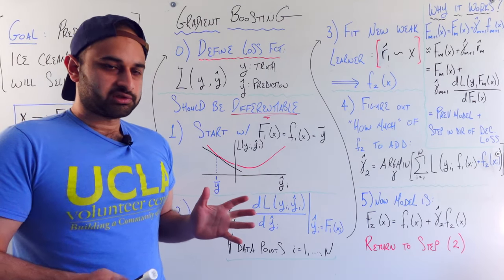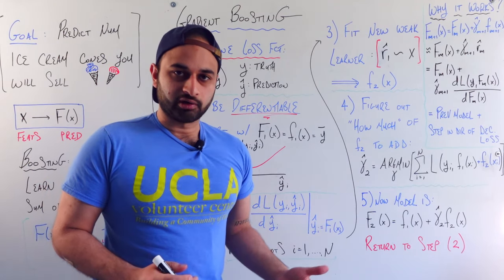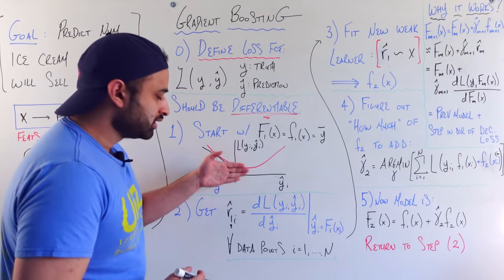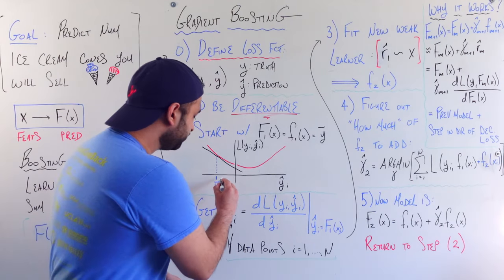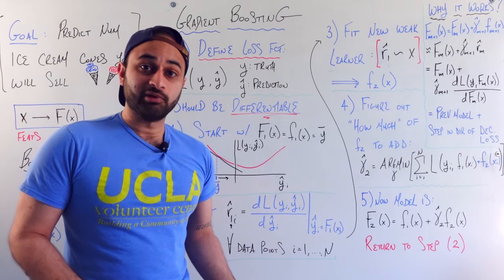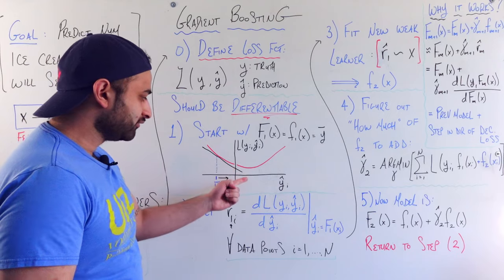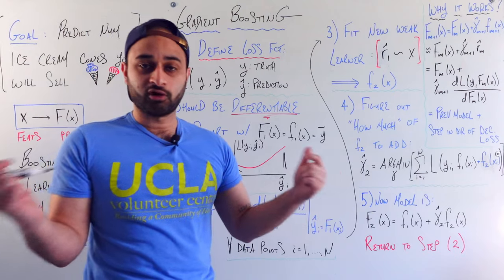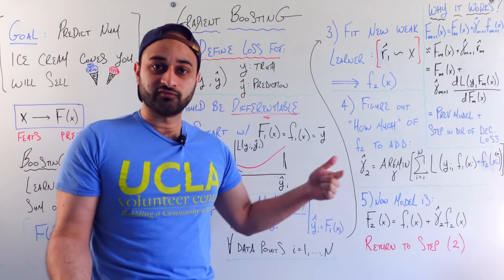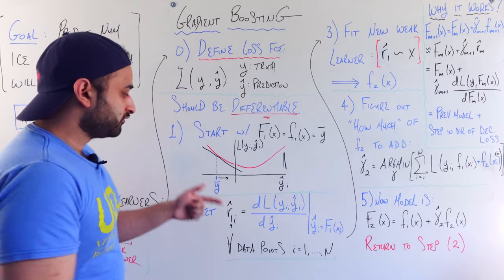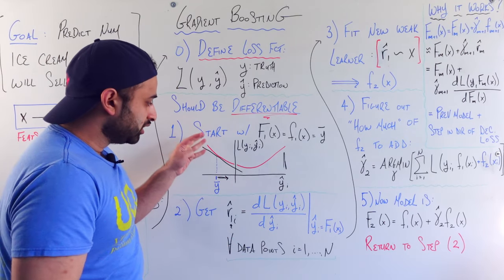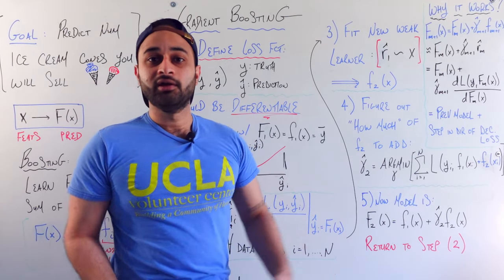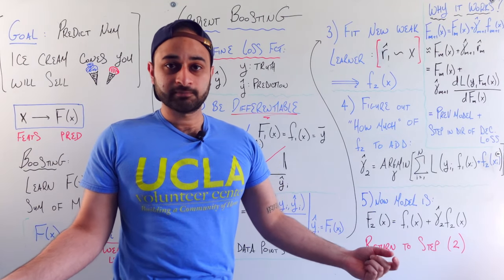Why did we just do this? We did this because we would like the next weak learner that we learn to hopefully move this prediction in the direction of decreasing loss. For example, if I move the prediction a little bit in one direction, I know to move it that way because the gradient I just computed is negative. If my prediction was in the other direction, the gradient would have been positive and I'd know to move the other way. So the gradient is informing which way I'm supposed to go to minimize the loss on each of these examples.